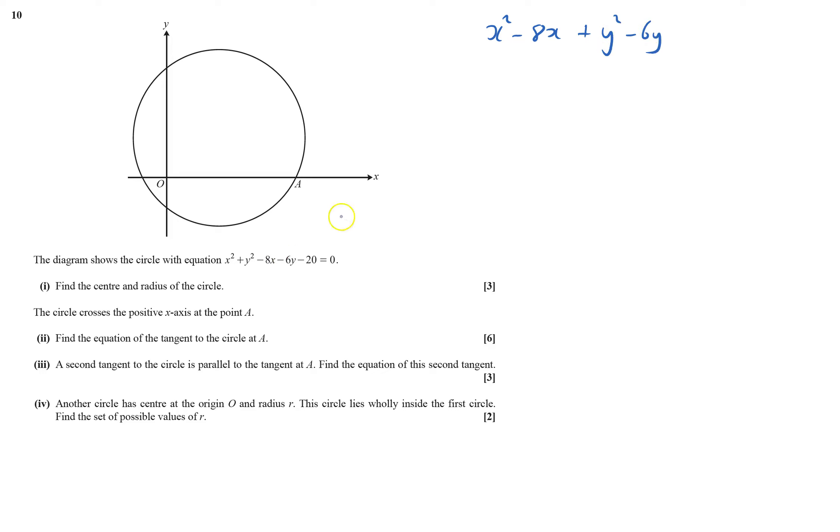minus 20 equals zero. Now I'll complete the square: x minus 4 squared will give me the x squared and the minus 8x, plus 16. Then y minus 3 squared will also give me plus 9.